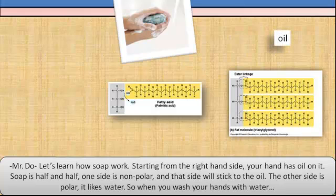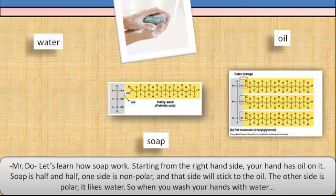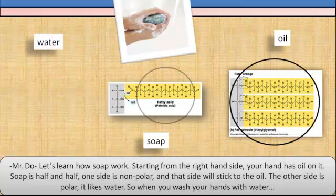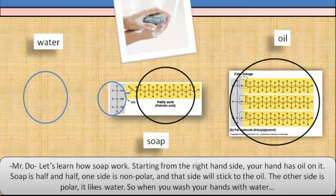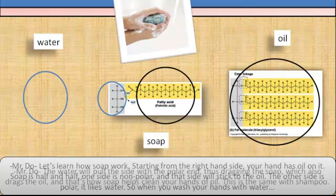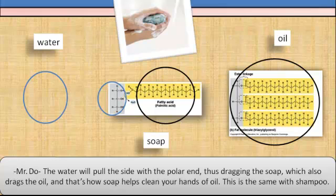Let's learn how soap works. Starting from the right side, your hand has oil on it. Soap is half and half — one side is nonpolar and sticks to the oil, while the other side is polar and likes water. When you wash your hands with water, the water pulls the polar end, dragging the soap along, which also drags the oil away. That's how soap helps clean your hands of oil.